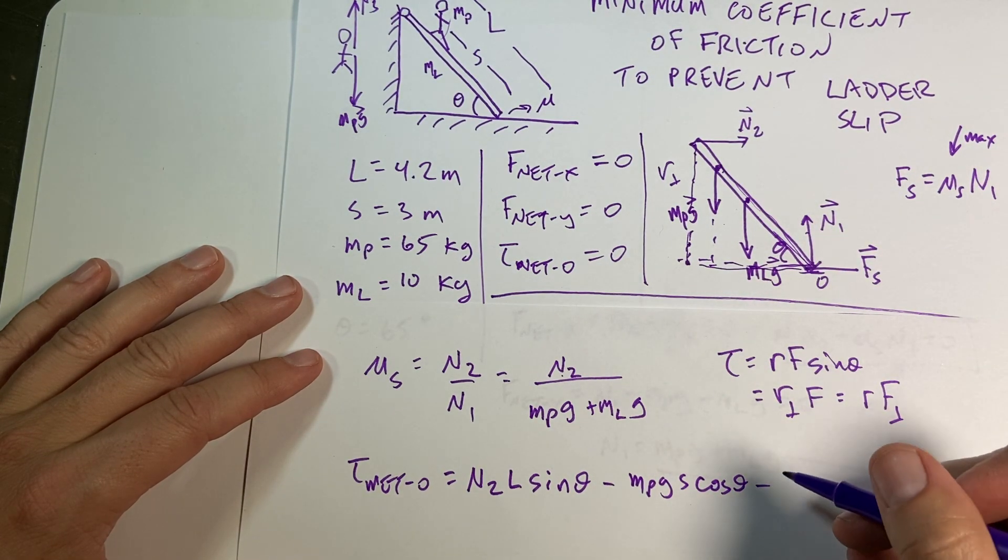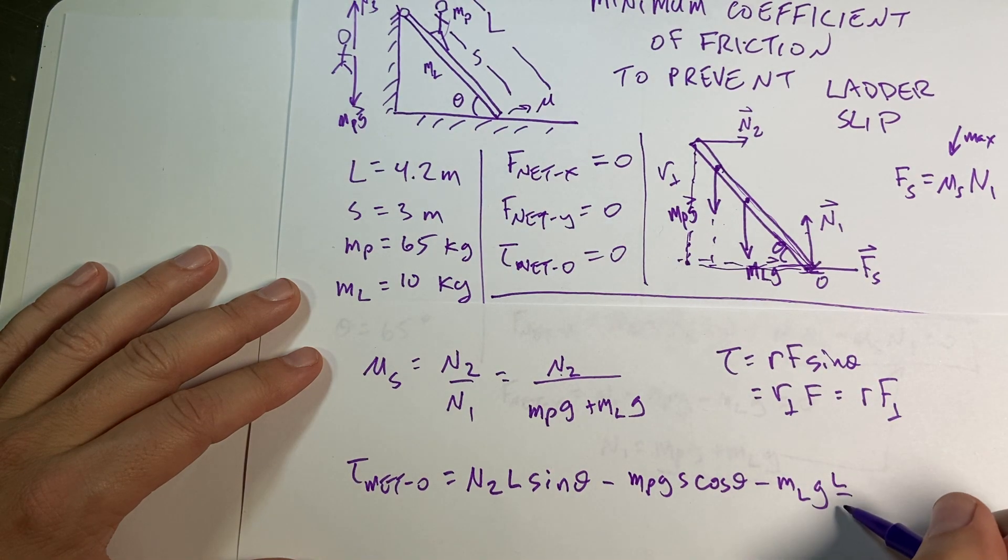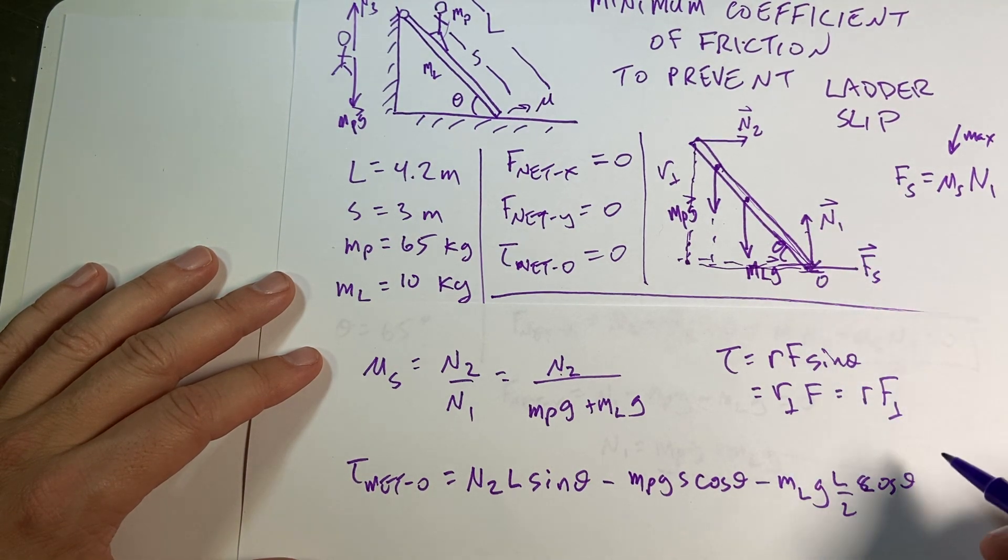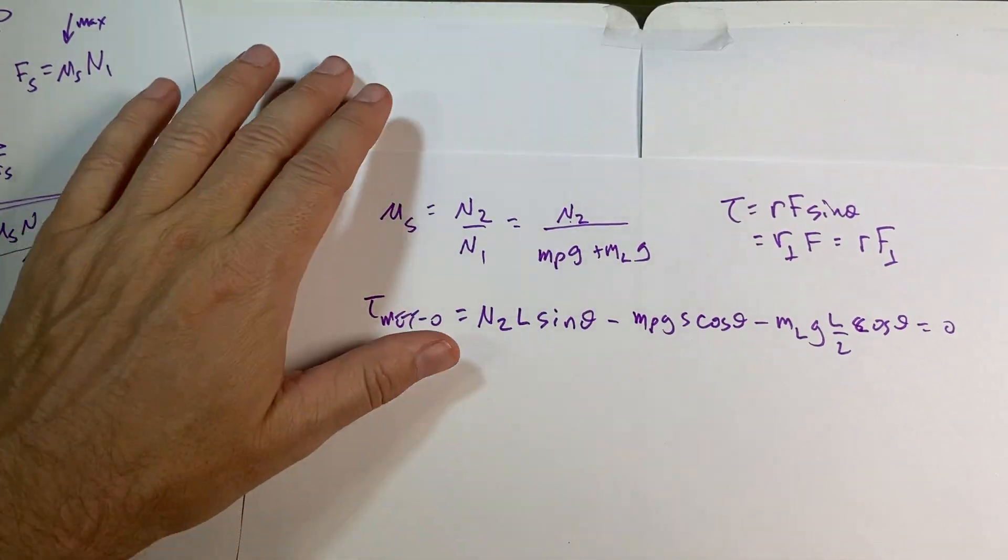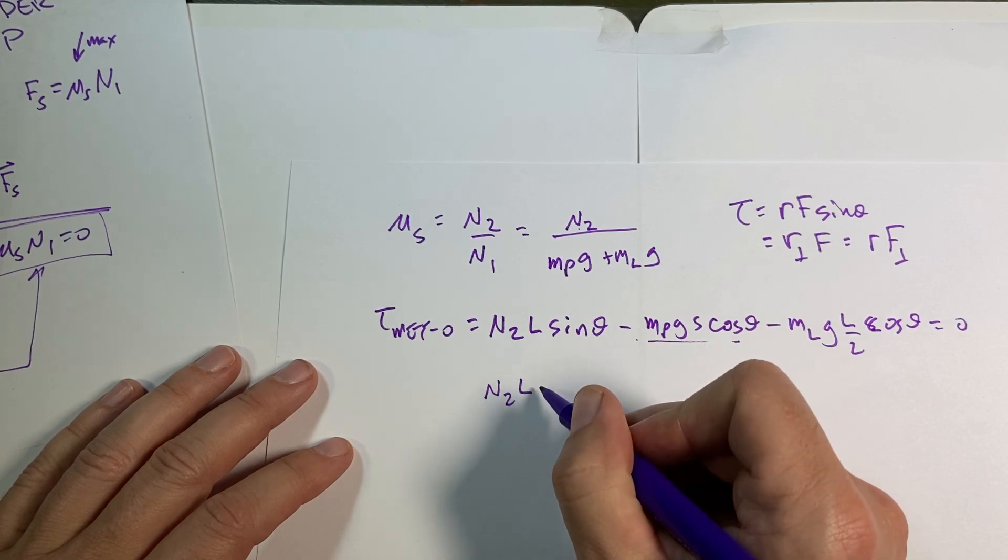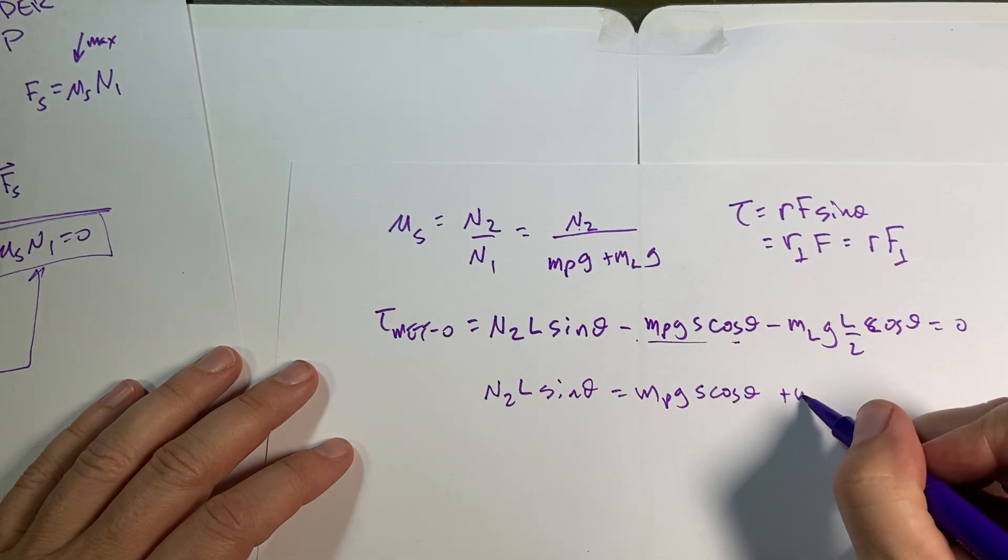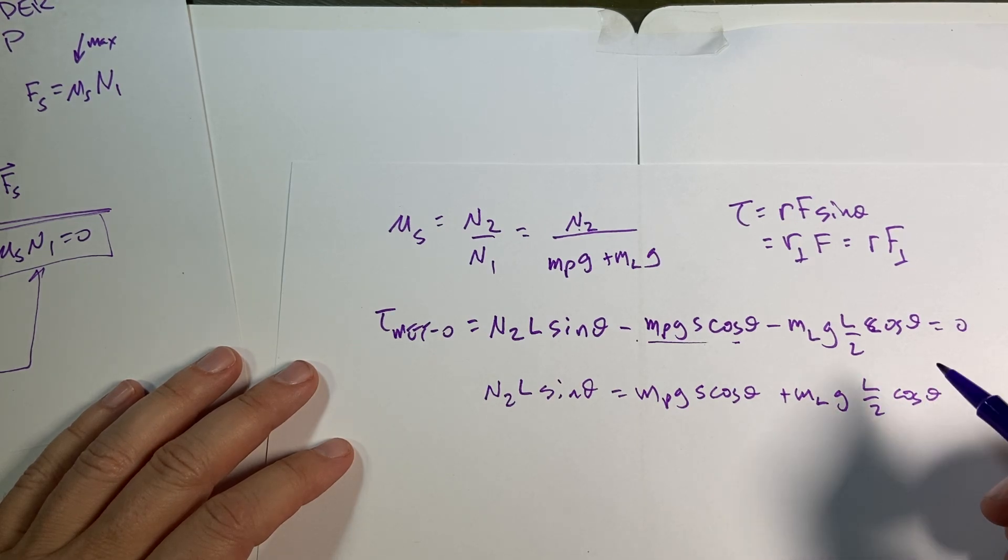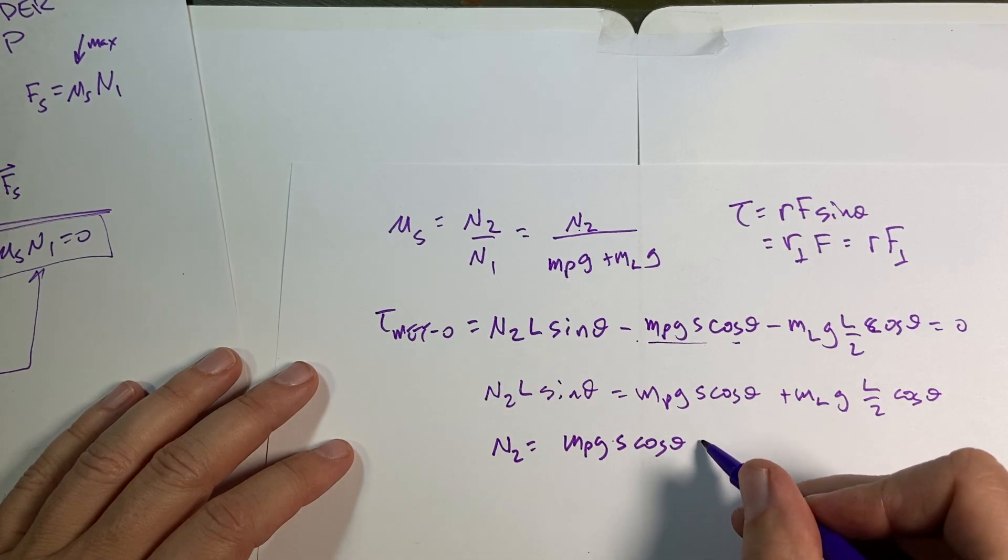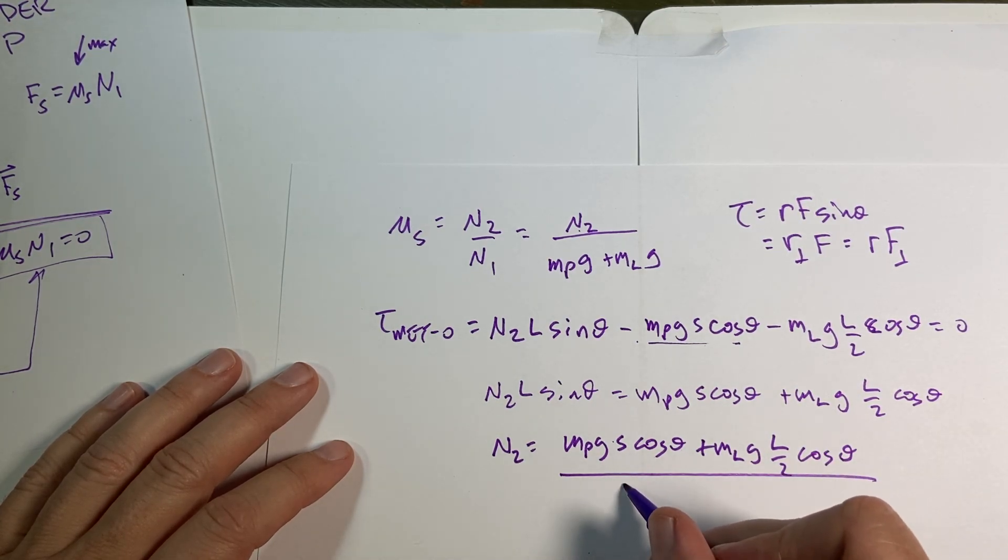Now for this one, it's going to also be in the clockwise direction. So it's minus MLG. This distance is L over 2. L over 2 cosine theta. Now these two don't exert a torque because they have a zero R. Okay, so now I want to solve for N2. So I'm going to add this and this to both sides. Okay, now I can divide by L sine theta. I get N2 equals MPG S cosine theta plus MLG L over 2 cosine theta. All of that over L sine theta.